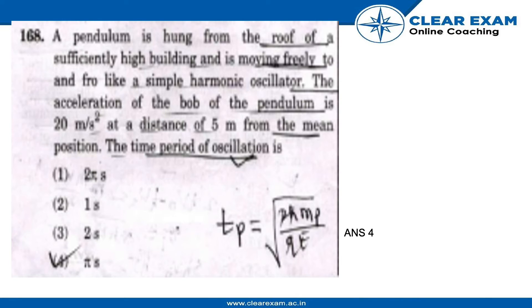In simple harmonic motion, the magnitude of acceleration is a = ω²x. We know that a is 20 and x is 5, so we can find that ω comes out to be 2.